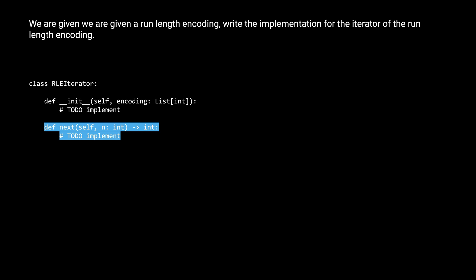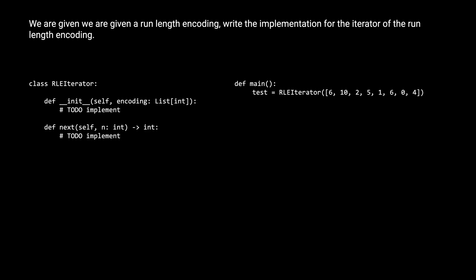This is probably a bit confusing, so let's go through an example. On the right here, we have a main method which shows how your program might be called. First, we have the RLE iterator object being constructed with the encoding of 6, 10, 2, 5, 1, 6, 0, 4.